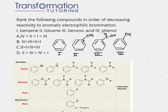So this is benzene, this is toluene. Toluene is a benzene ring with a CH3 group. Benzoic acid is a benzene ring with a COOH group, and phenol is a benzene ring with an OH group.